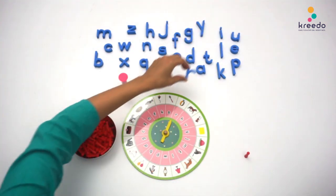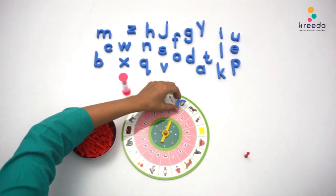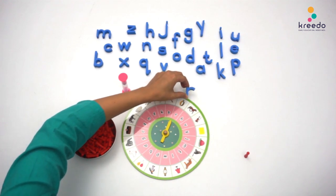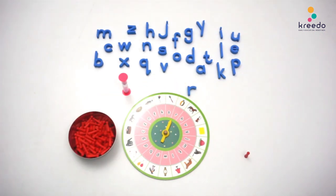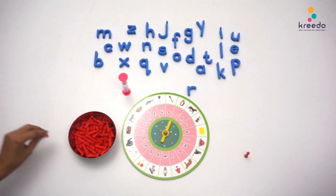The first player matches the same sound on the roulette to its letter. The first player picks a skittle, keeps it to his or her side, and keeps the letter back to its place.